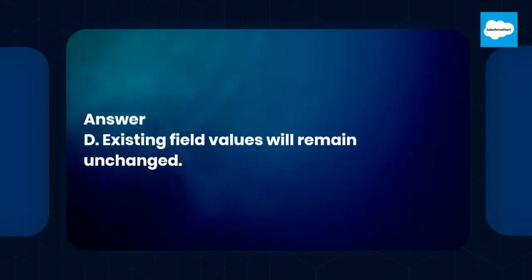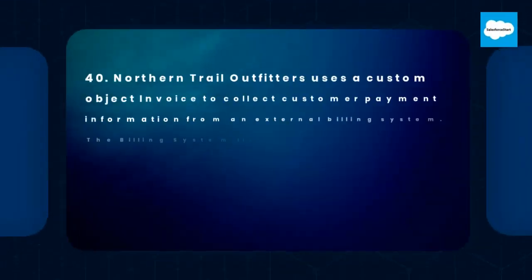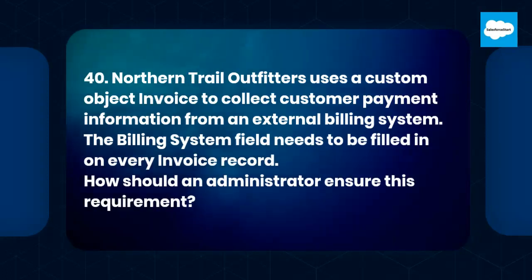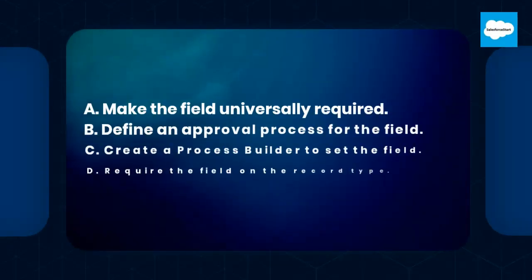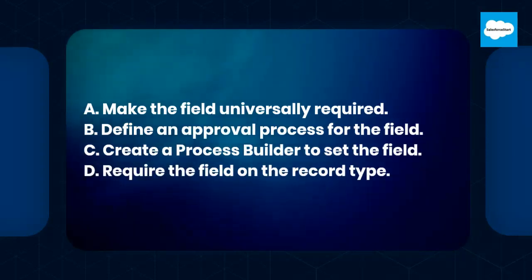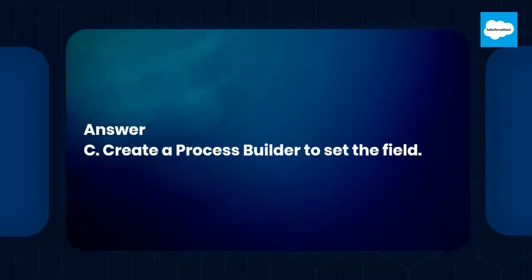Answer: D. Existing field values will remain unchanged. Question 40: Northern Trail Outfitters uses a custom object invoice to collect customer payment information from an external billing system. The billing system field needs to be filled in on every invoice record. How should an administrator ensure this requirement? A. Make the field universally required. B. Define an approval process for the field. C. Create a process builder to set the field. D. Require the field on the record type. Answer: C. Create a process builder to set the field.